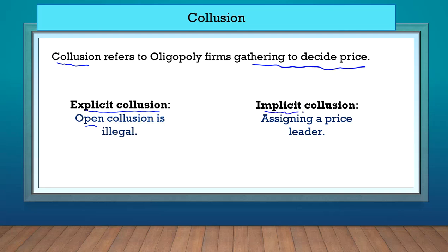Implicit collusion now is when they do it discreetly. For example, the oligopoly firms will assign a price leader. So whatever the price leader does, the other firms will also follow. This is an example of implicit collusion.